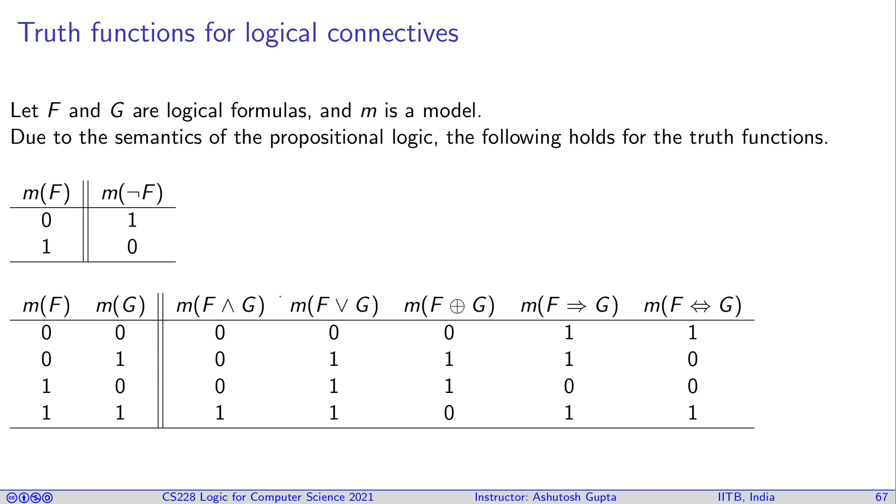Similarly, we can write tables for conjunction, disjunction, XOR, implication, and equivalence. We take two parameters for these binary symbols and write all four combinations of values. Then you see for each combination what will be the outcome. For example, if you have zero and one coming in, which are different values, the XOR says this is a good choice, so it returns one.